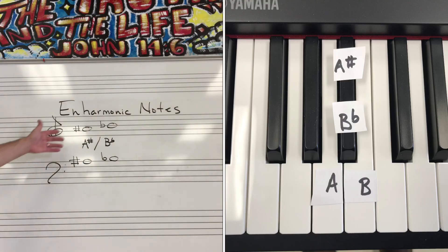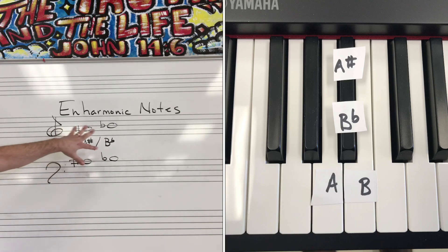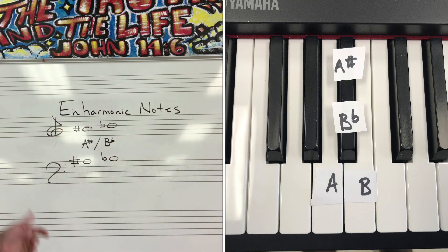On the staff, they look different — A-sharp and B-flat — with different lines and spaces. But to our ears, they sound exactly the same.